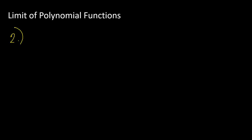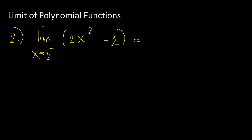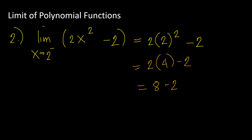Another example: evaluate the limit of 2x² minus 2 as x approaches 2 from the left. Since this is a polynomial function, we don't need to worry about left or right — direct substitution gives the same result regardless. So we have 2 times (2²) minus 2, which is 2 times 4 minus 2, giving us 8 minus 2, which equals 6. So the limit of 2x² minus 2 as x approaches 2 from the left is 6.